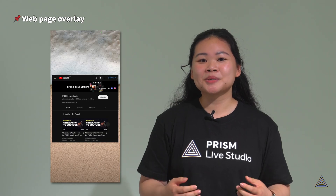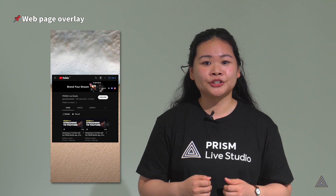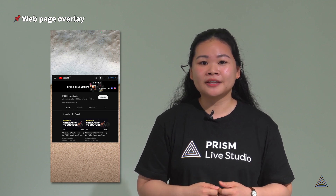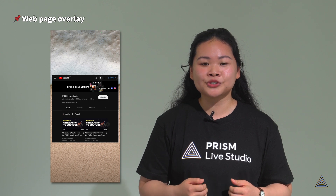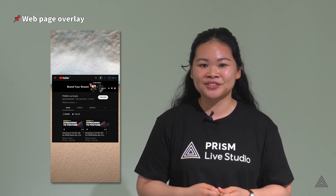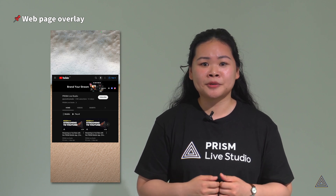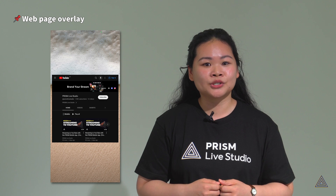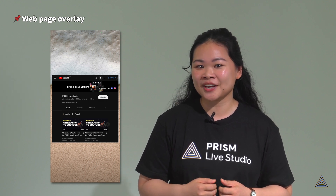The Prism Mobile app has a built-in web page overlay available via URL entry. You can find this feature in the widgets menu in My Studio, which allows you to bring your website to the screen and share it with your viewers. Due to the nature of mobile, it doesn't support direct manipulation of web pages, but it can be a very useful tool for easily sharing web content during a live stream.